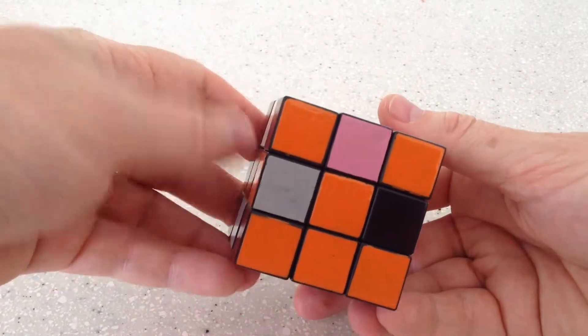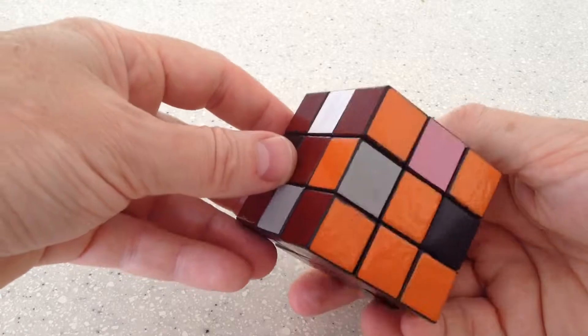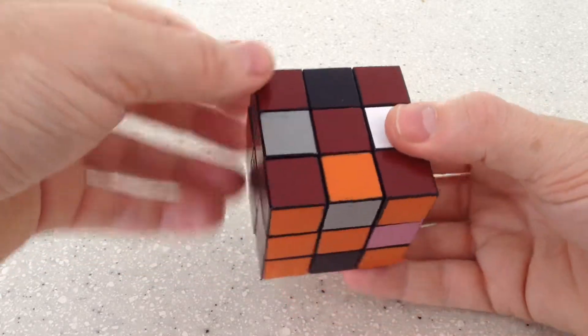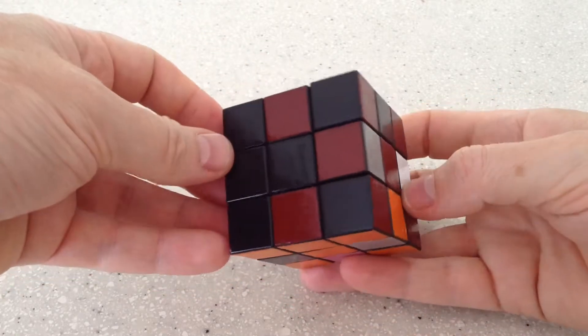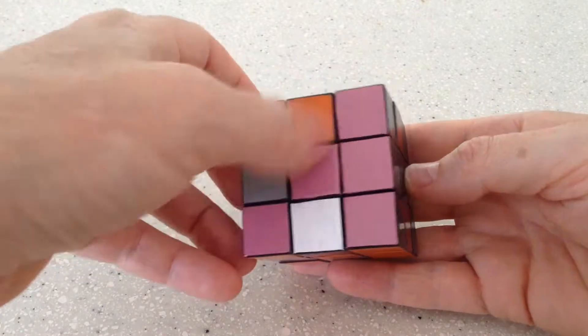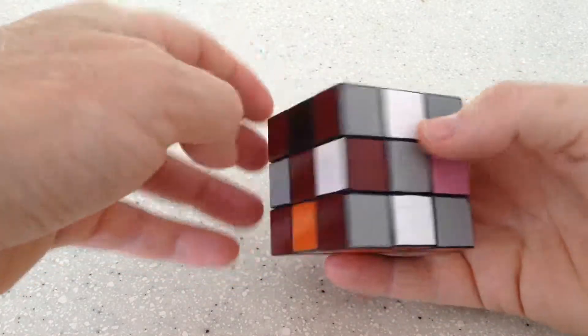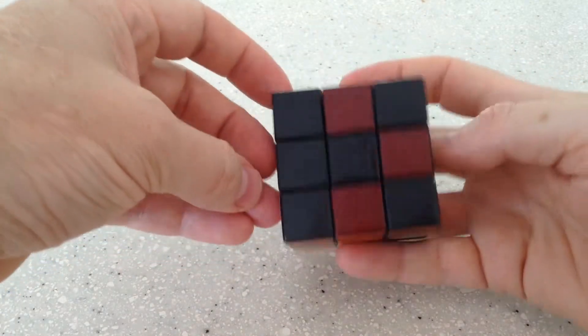And then we have the four orange cubes in the correct orientation. You can see they line up with the adjacent centers. We have crosses on all six sides of the cube.